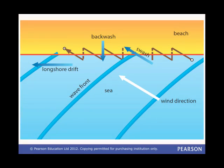Waves are powered by the wind. Prevailing winds do not always hit the coastline straight on. This means that waves carry material up the beach at an angle. But gravity means that the material runs straight down the beach before waves pick it up and move it up the beach at an angle again. So material gets carried along the beach in a process called longshore drift.